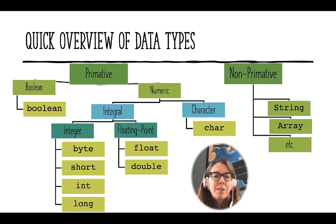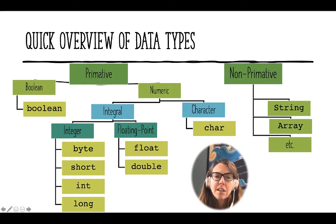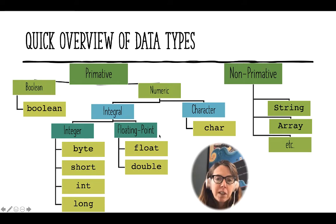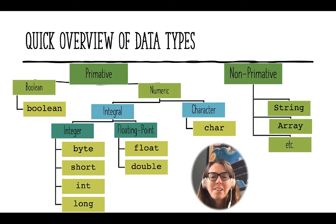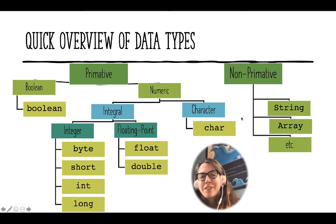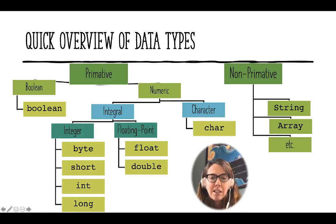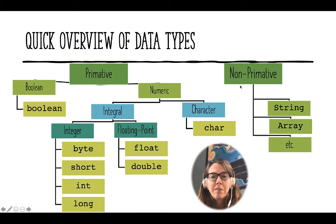Up until now we've been looking at various data types, primarily numbers. If you follow this chart, you'll see that everything we've considered is under a primitive type — different types of integers: byte, short, int, and long, and also floating point data types float and double. Briefly we discussed characters, of type char. All of these have been under the primitive data type, meaning they are a type of data on their own. But we're going to move over into a new branch: the non-primitive branch.